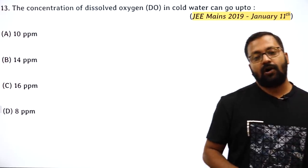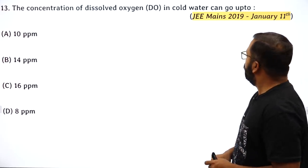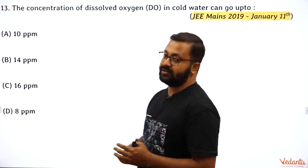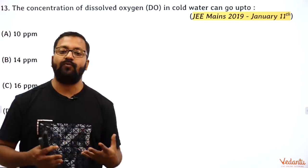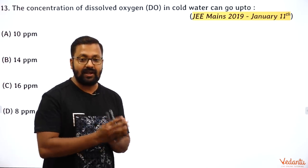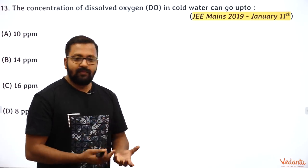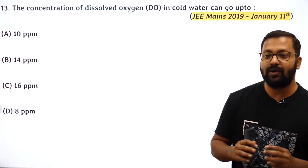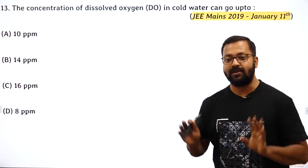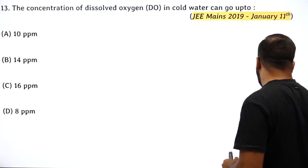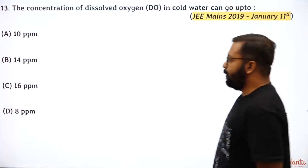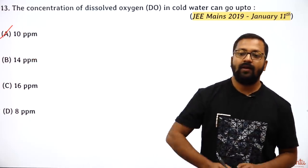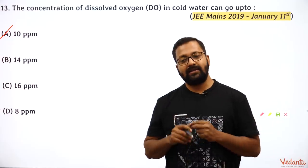The concentration of dissolved oxygen in water: in cold water, dissolved oxygen content is more; in hot or boiling water it's less — that's why aquariums have pumps. The dissolved oxygen content in water can go as high as 10 ppm.